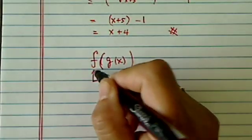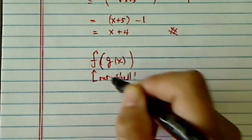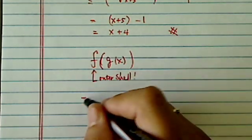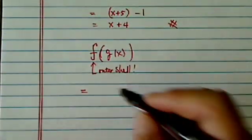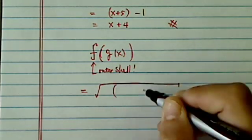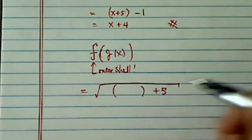Well, start the outer shell first. Outer shell, and then function f says give me something, I'm going to add 5 to it, and then I'm going to take a radical root.